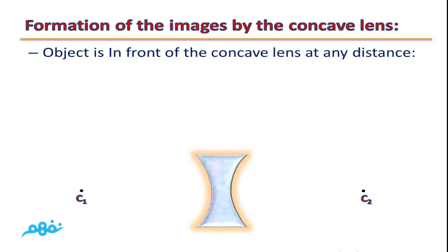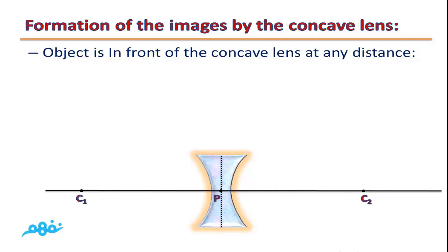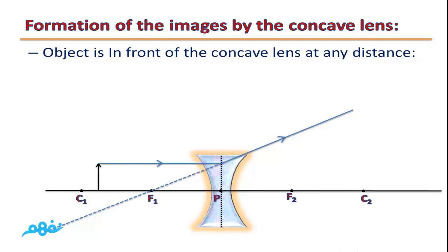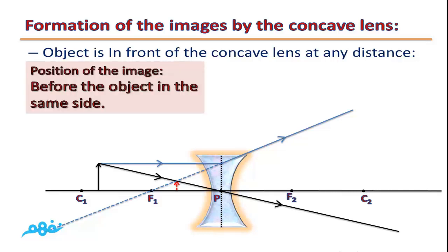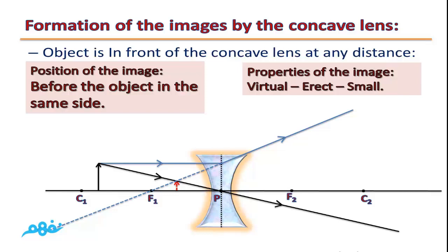Formation of images by a concave lens: the object is in front of the concave lens at any distance. Whatever the distance between the object and the lens, the properties of the image remain constant. The first light ray is parallel to the principal axis, is refracted by the lens, and its extension passes through the focus. The second light ray passes through the optical center without refraction. The image is formed on the same side as the object, and it is virtual, erect, and small.